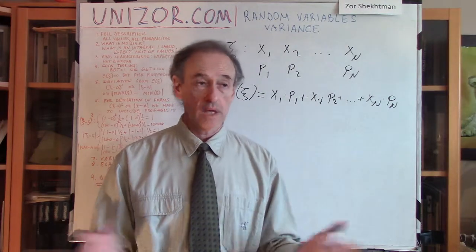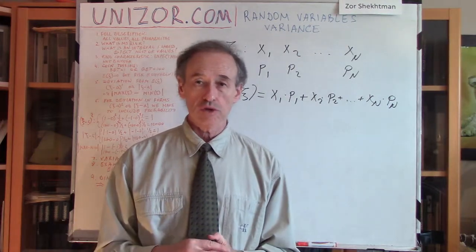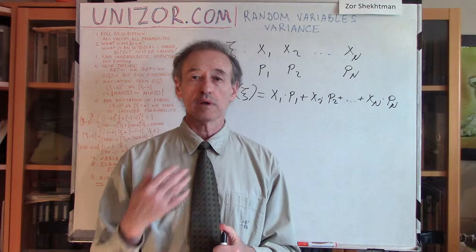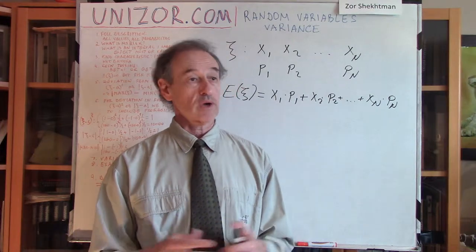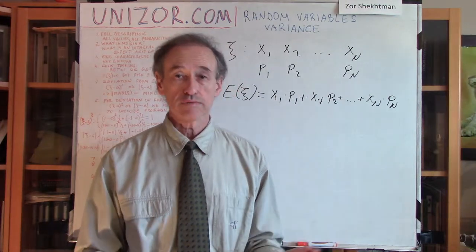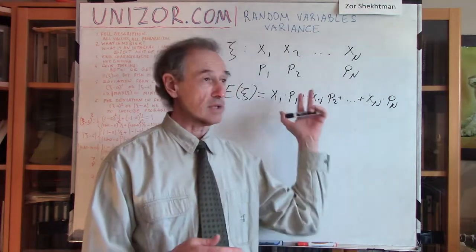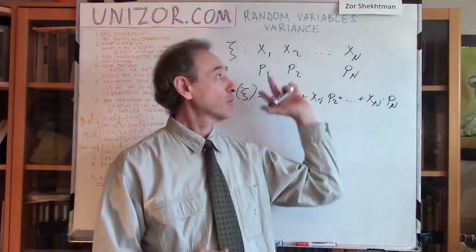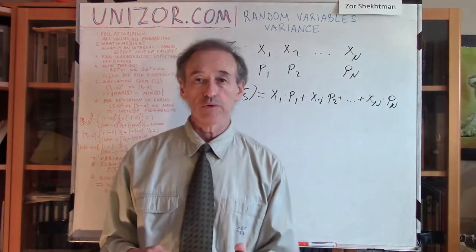We have introduced one particular characteristic of the random variable: its expected value. The expected value in this case is a sum — basically a weighted average of different values where the weights are the probabilities. This is definitely a very good characteristic which helps you understand where your values will be concentrated on average. But is it a sufficient measure to evaluate risk?